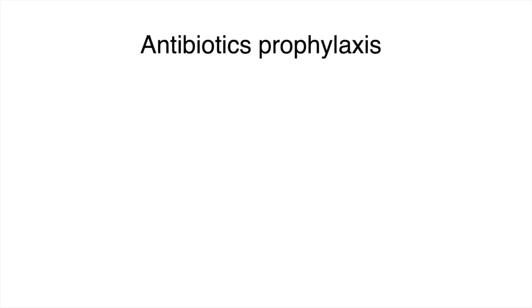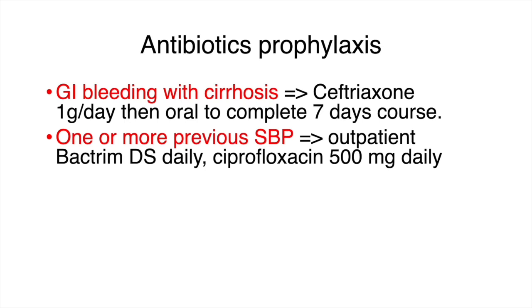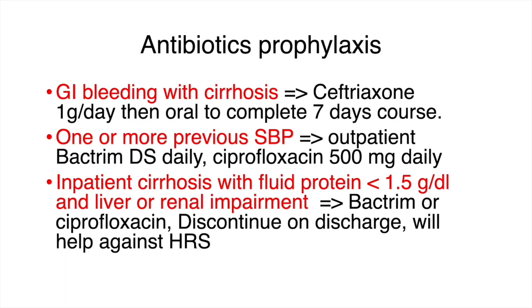Now, when do we give antibiotic prophylaxis against SBP? First, if the patient has GI bleeding with cirrhosis, we give cefotaxime 1 g per day to complete a seven-day course as prophylaxis. Second, if the patient has one or more previous episodes of SBP, give outpatient prophylaxis with Bactrim double strength daily or ciprofloxacin 500 mg daily. Third, if an inpatient has cirrhosis with ascitic fluid protein less than 1.5 and liver or renal impairment, they will likely benefit from SBP prophylaxis with Bactrim or ciprofloxacin — but this should be discontinued on discharge. This also helps protect against hepatorenal syndrome.